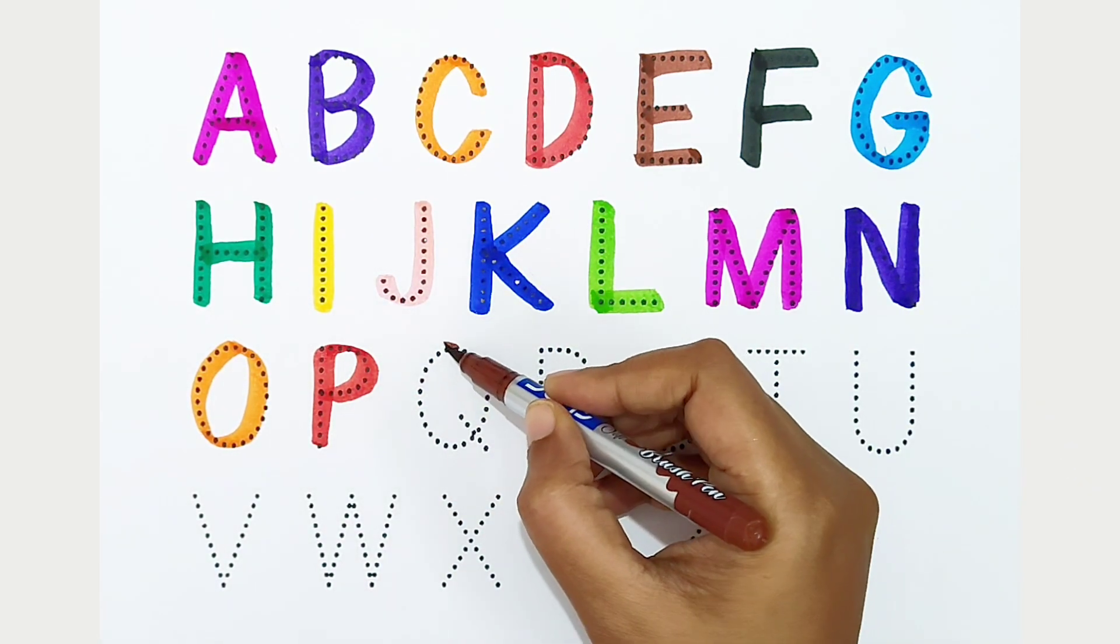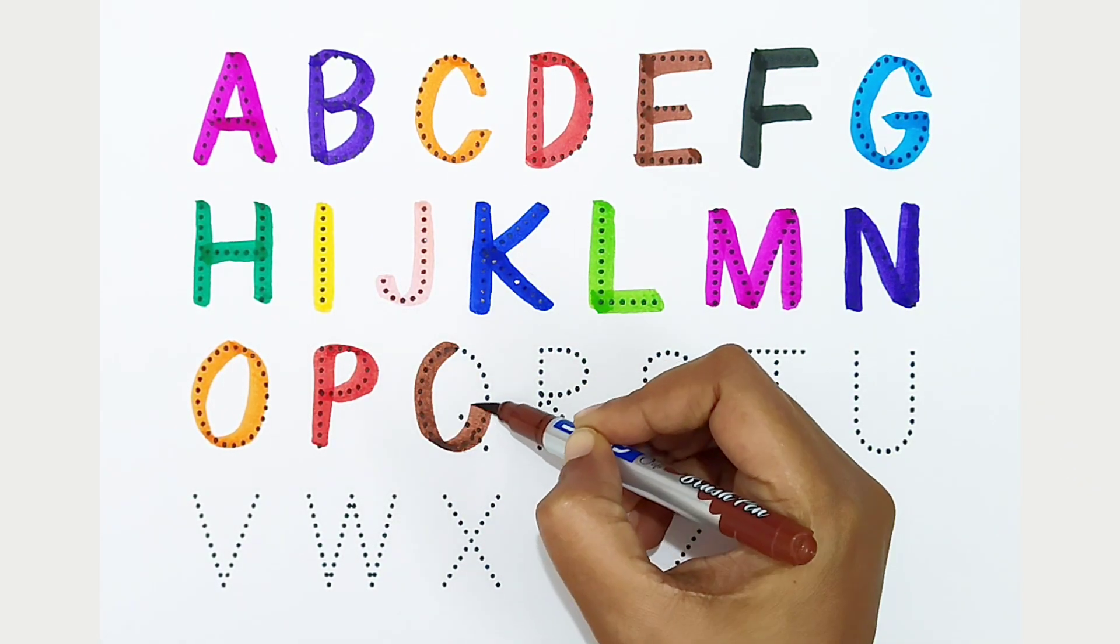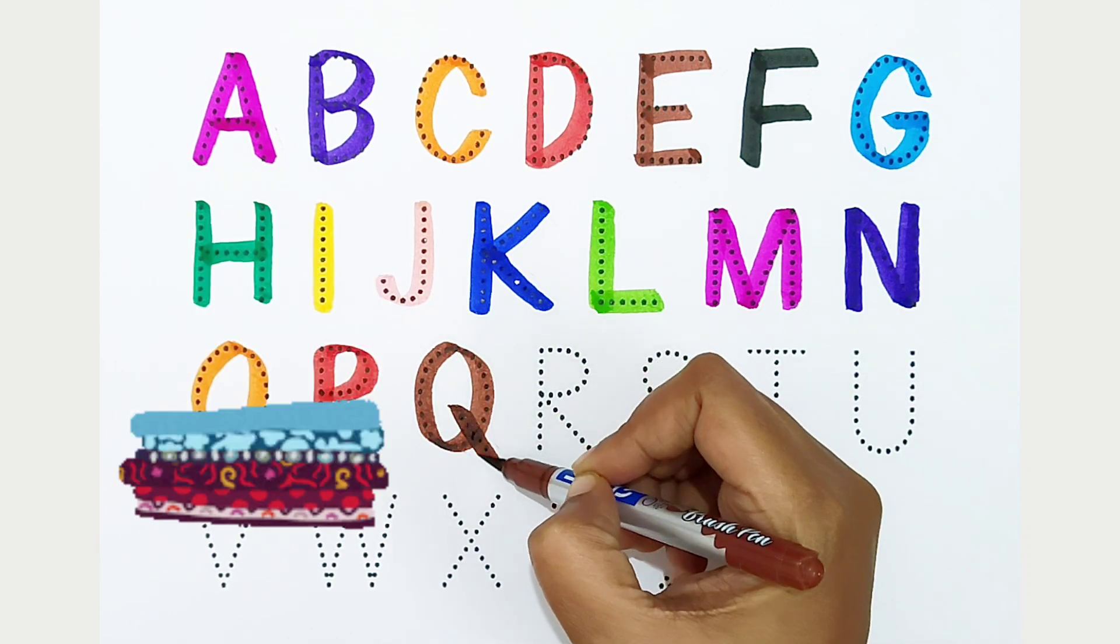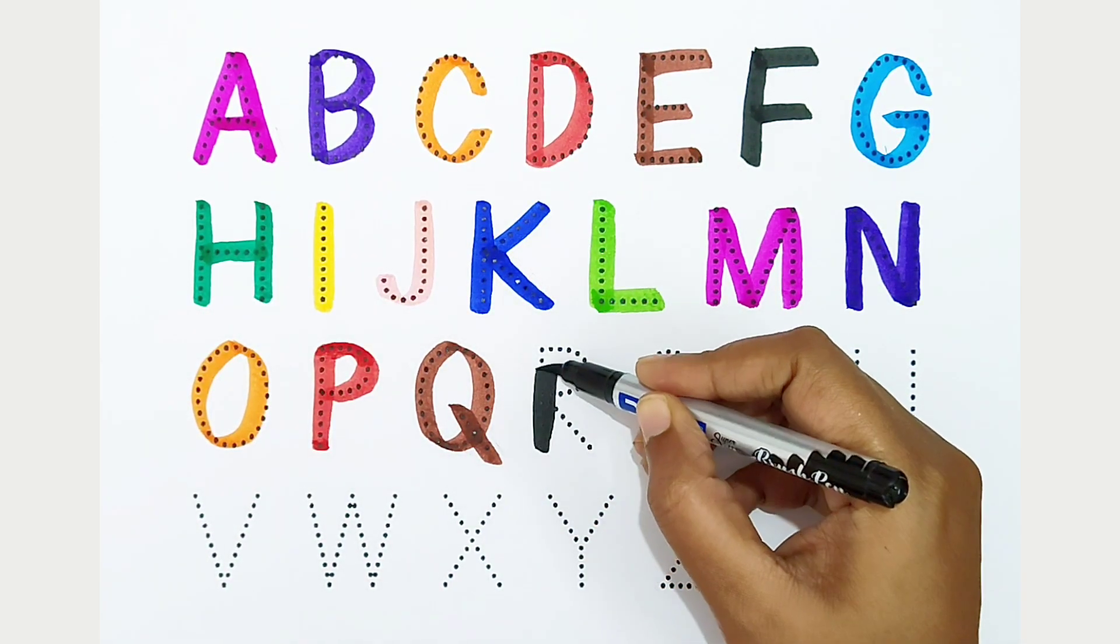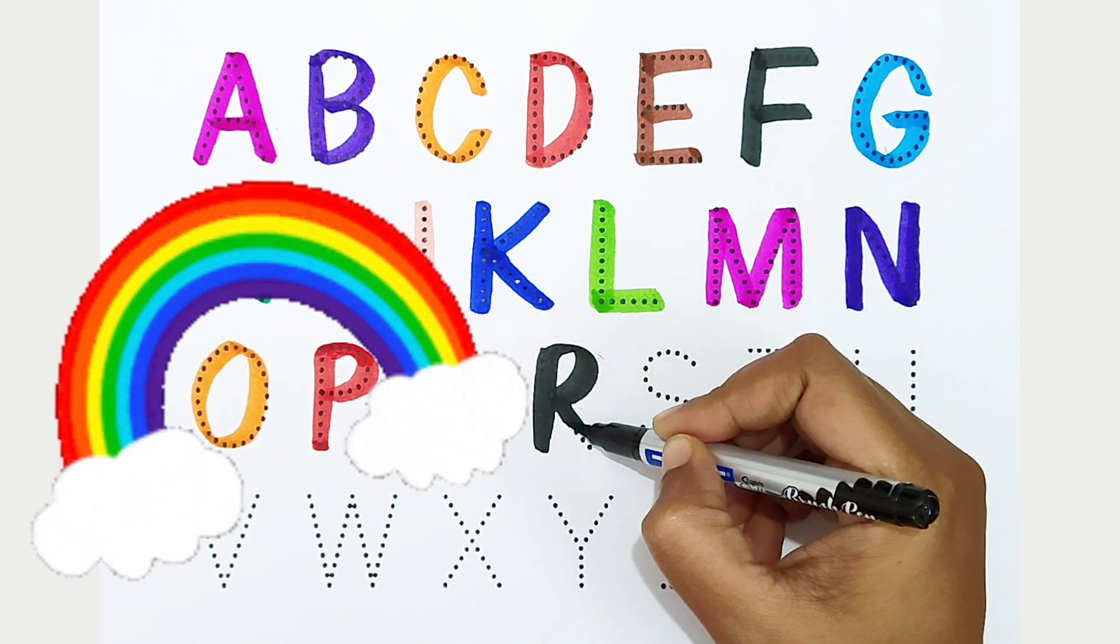Q: brown color. Q is for quilt. R: black color. R is for rainbow.